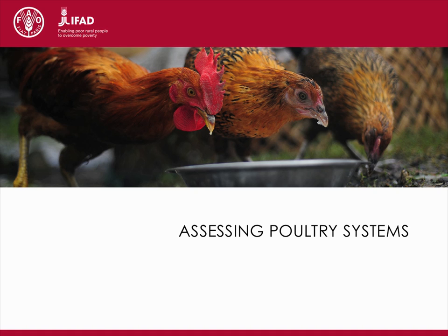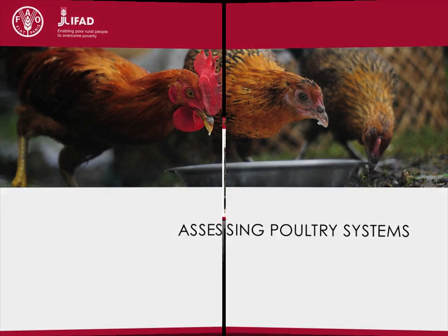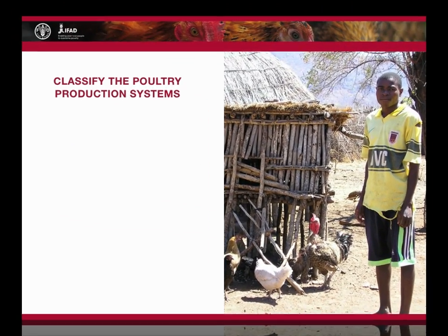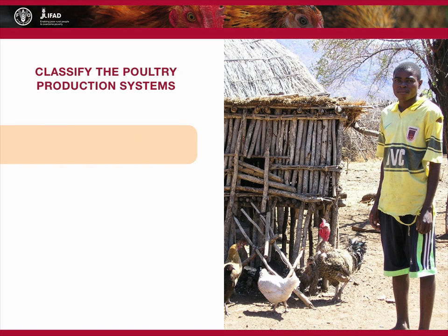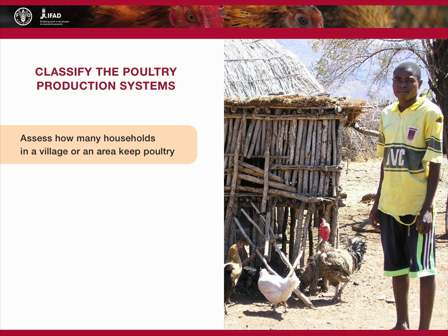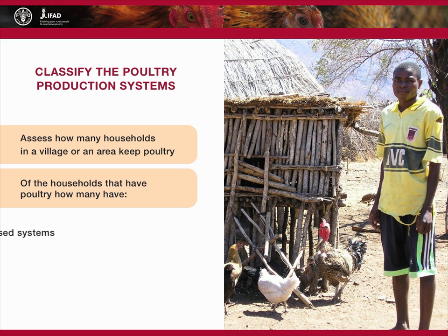To classify poultry production systems, you first need to assess how many households in a village or area keep poultry. Then, of the households that have poultry, calculate the number of true scavenge-based systems, free-range systems, and small-scale intensive systems.